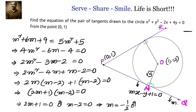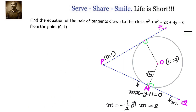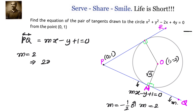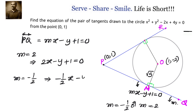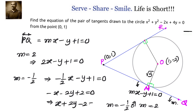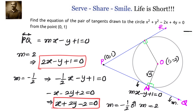Once we have two values for m, we substitute back into the tangent equation mx - y + 1 = 0. Substituting m = 2 gives the equation 2x - y + 1 = 0. Substituting m = -1/2 gives -x/2 - y + 1 = 0, which simplifies to x + 2y - 2 = 0. Therefore, the equations of the tangents are 2x - y + 1 = 0 and x + 2y - 2 = 0.